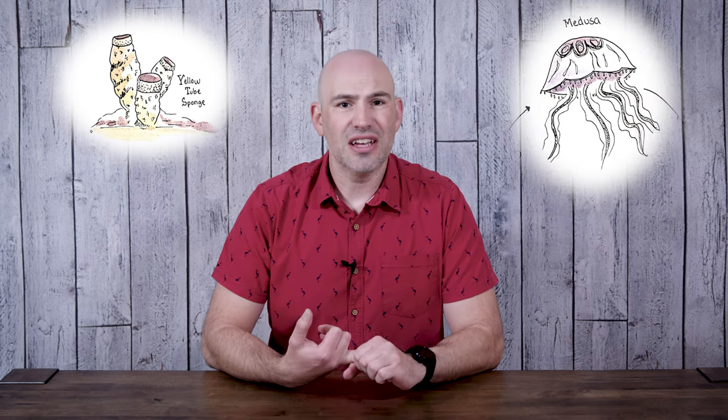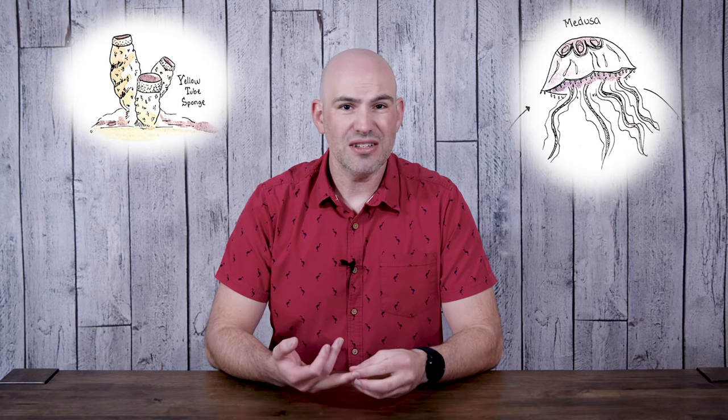Let's begin by discussing our first phyla of worm, Platyhelminthes. 'Helminthes' means worm, 'platy' means flat — these are the flatworms. They're not that complicated as far as worms go, but they are a lot more complex than the previous phyla we've discussed, like Porifera, the sea sponges which have no tissue, no muscle, no brain; and Cnidaria, the sea jellies, which only have two tissue layers and still no brain. Platyhelminthes has three tissue layers, becoming more complex.